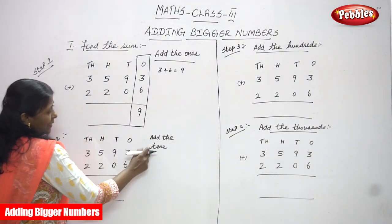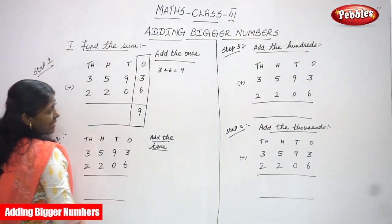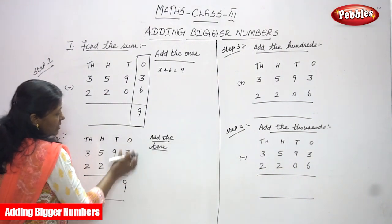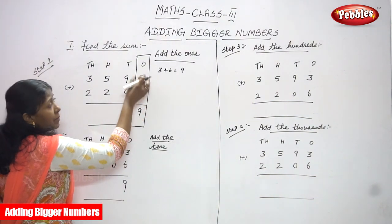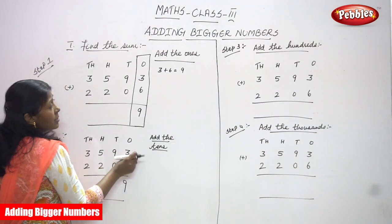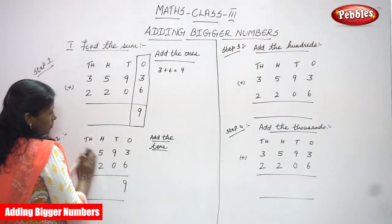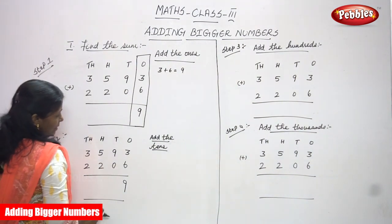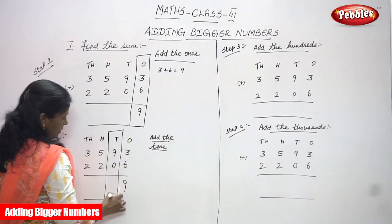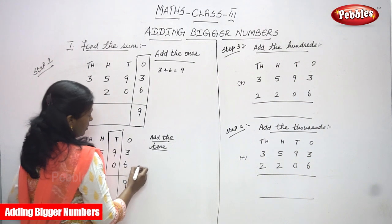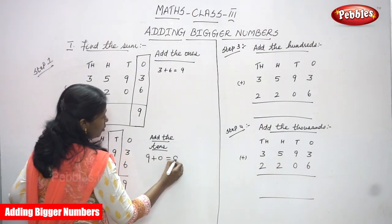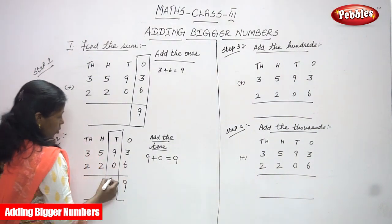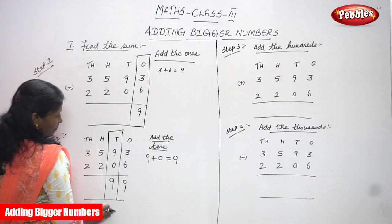Step two: add the tens. There is no carryover, so just add as it is. I'm focusing only the tens place. The numbers in the tens place are: first number nine, second number zero. Nine plus zero - any number added with zero gives the same number - so that is nine. Write nine in the tens place. Step two is over.